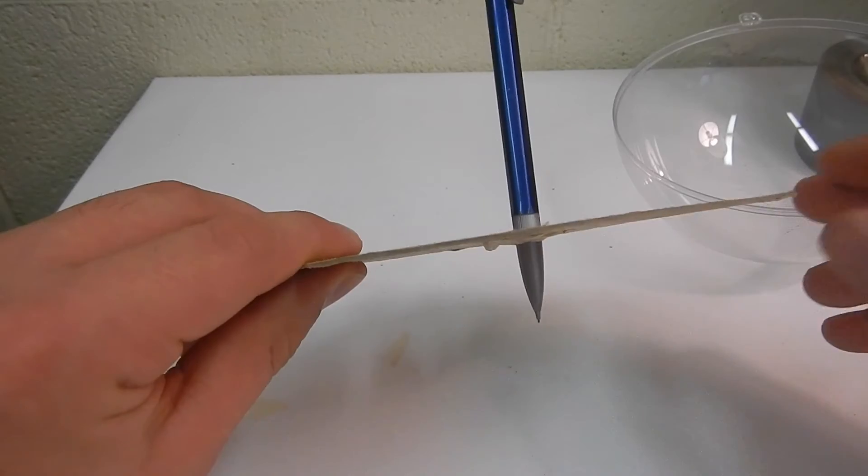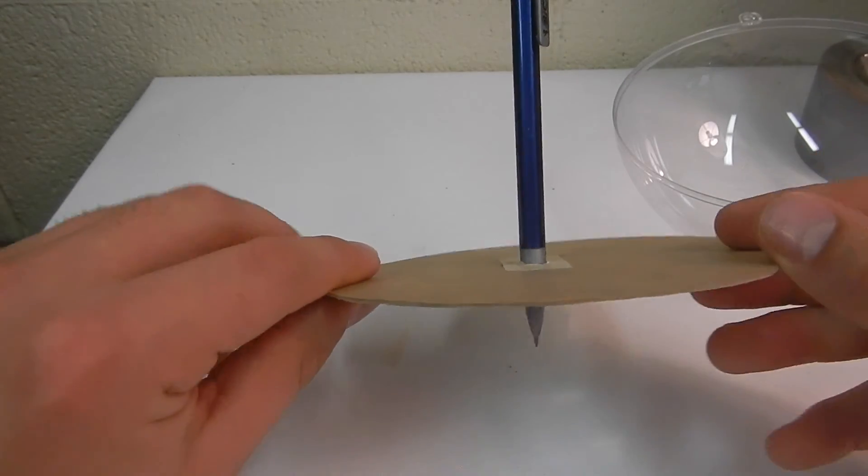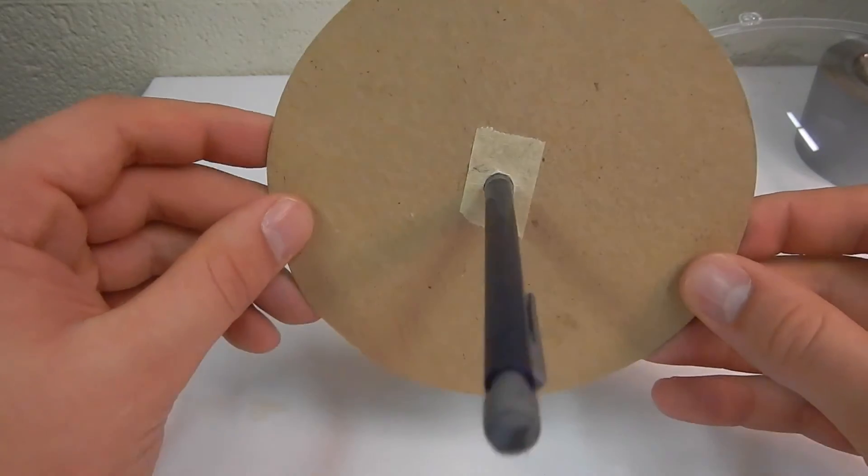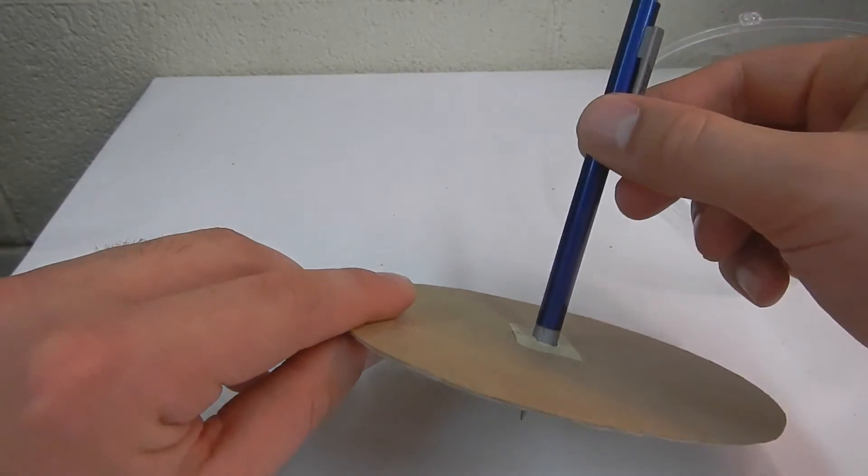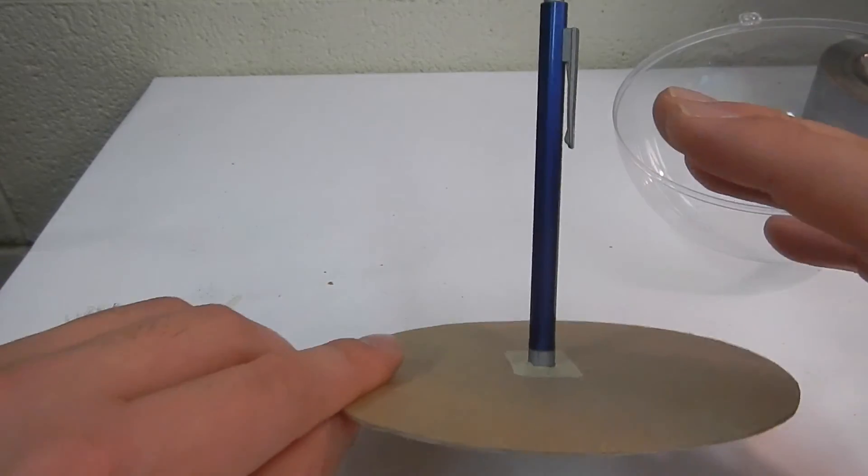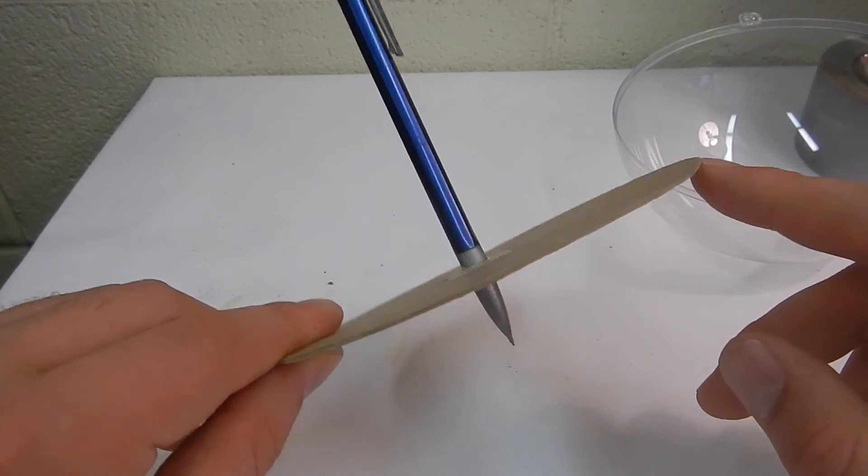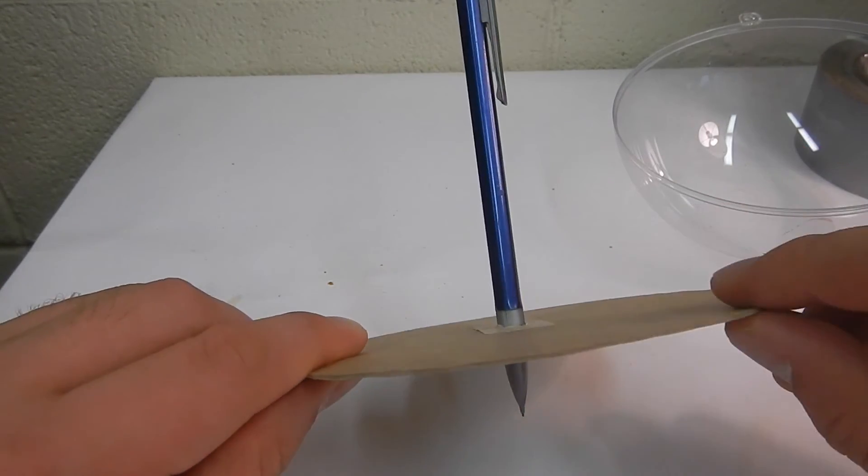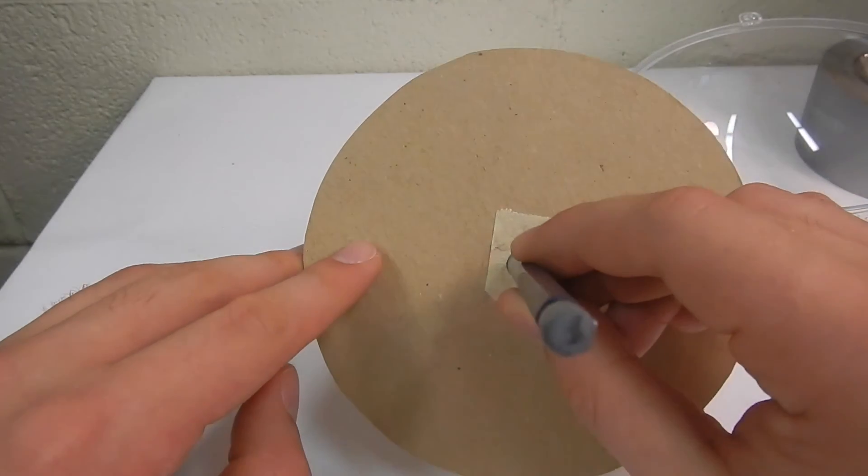So why would we do this? Why are we adding this pole on? Well, if we think about this again in 3D space, we have a plane and we also have a line marking the pole. If we move this plane and line into 2D space, we go from a plane to a line and a line to a point.